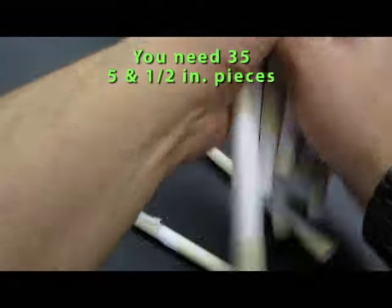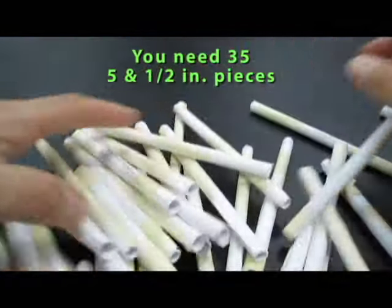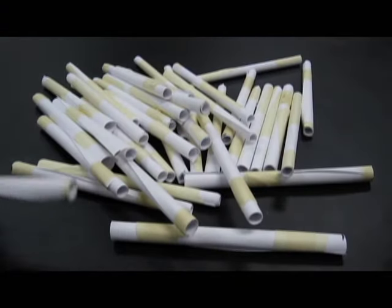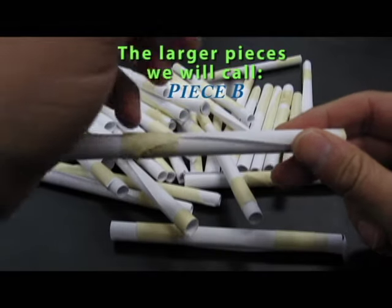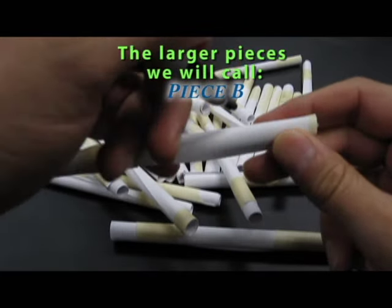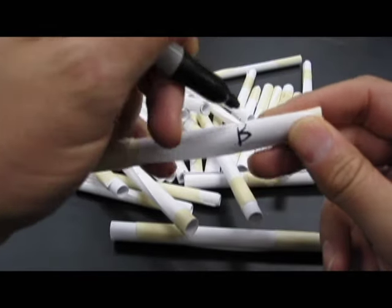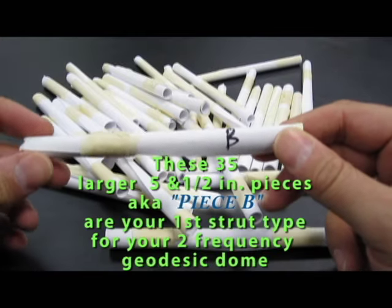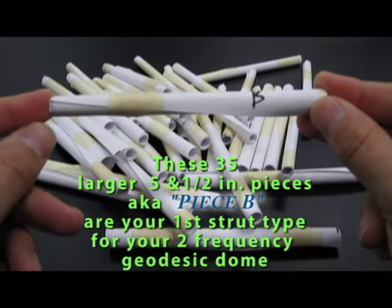To make your dome, you're going to have to have 35 5 and a half inch pieces that look like this. And what we'll do is we will call the 5 and a half inch pieces, these are the larger pieces that we'll call piece B. So, you are going to need 35 5 and a half inch pieces that we'll call piece B.